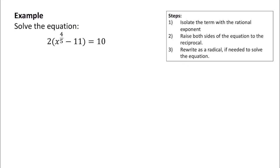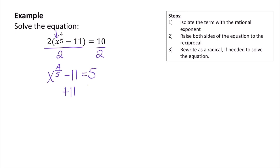Now let's try solving this equation: 2 times x to the 4 fifths minus 11 equals 10. Our strategy is to get that term with a rational exponent by itself. We're going to start off by dividing both sides of this equation by 2, which gives us x to the 4 fifths minus 11 equals 5. Then we're going to add 11 to both sides to isolate the term, so we get x to the 4 fifths power equals 5 plus 11, which is 16.